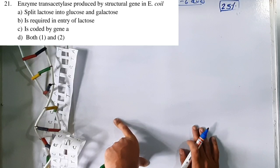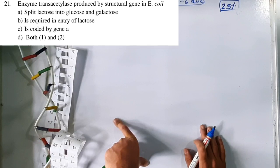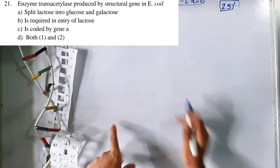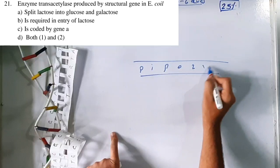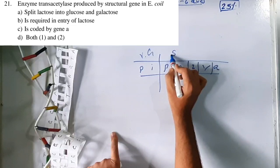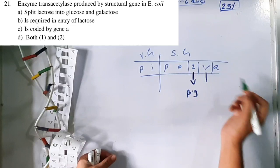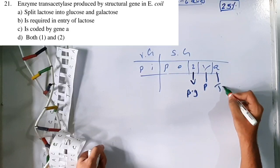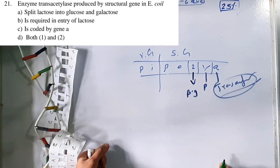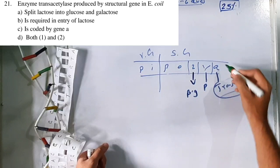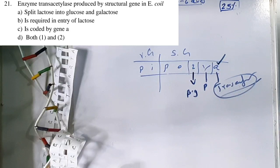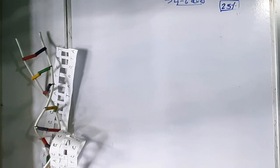Question 21: The enzyme transacetylase produced in E. coli is coded by structural gene A of the lac operon. In operon (PIPOSIA): Z codes for beta-galactosidase (splits lactose into glucose and galactose), Y codes for permease (allows lactose entry into the cell), A codes for transacetylase. Option C is correct.